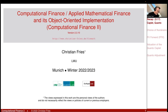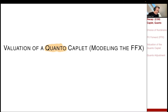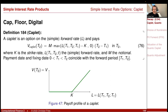Let's start. My section is valuation of a Quanto Kaplet. Now the thing is we look at the Quanto. We did the valuation of the Kaplet and the foreign Kaplet already — the foreign Kaplet was in our last session. So let's briefly repeat. The Kaplet is just paying the forward rate for the period from T1 to T2 at the end of the period in T2.